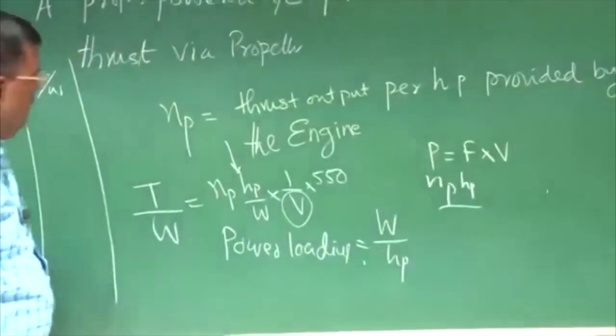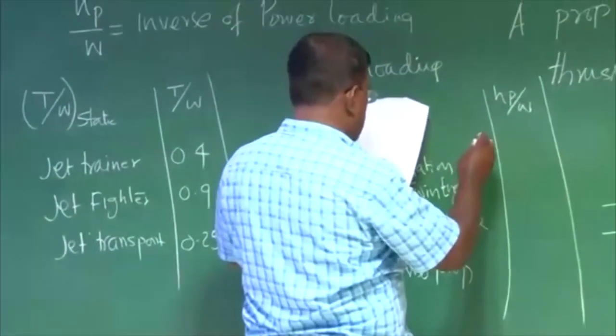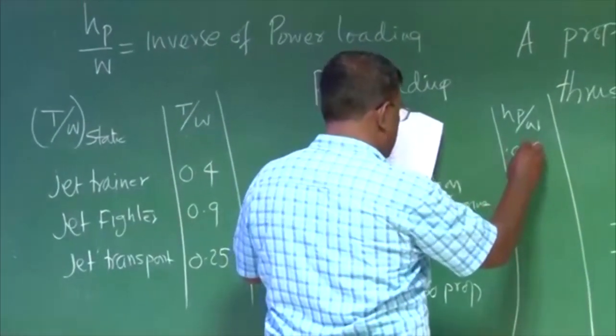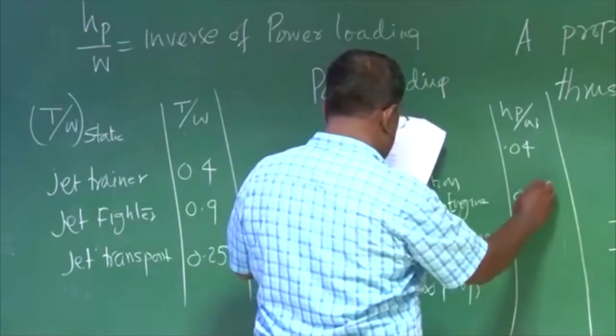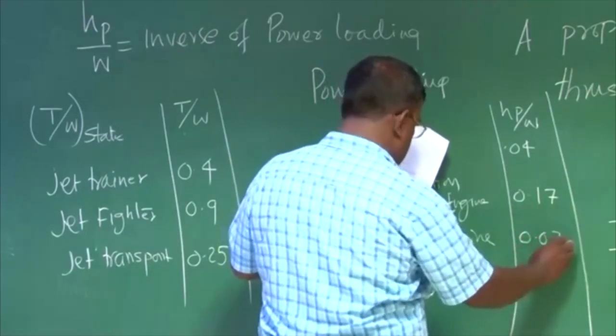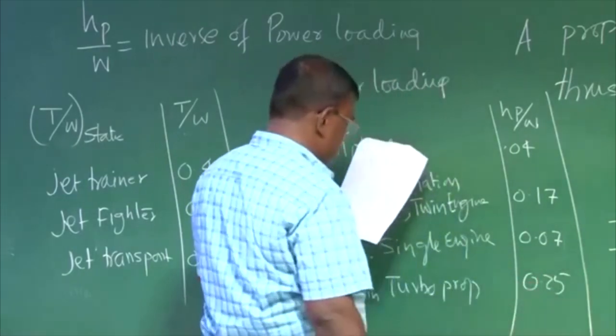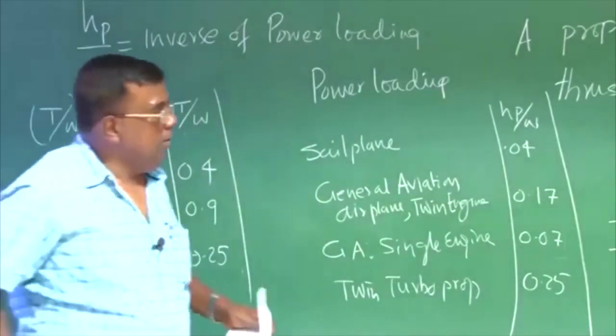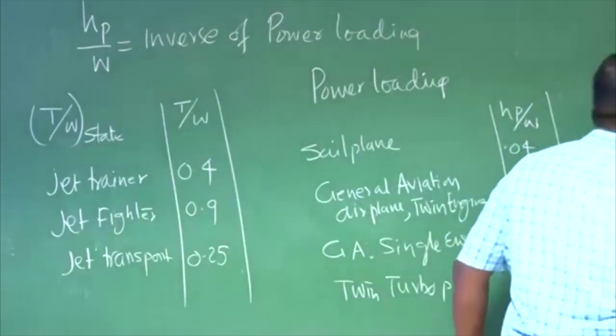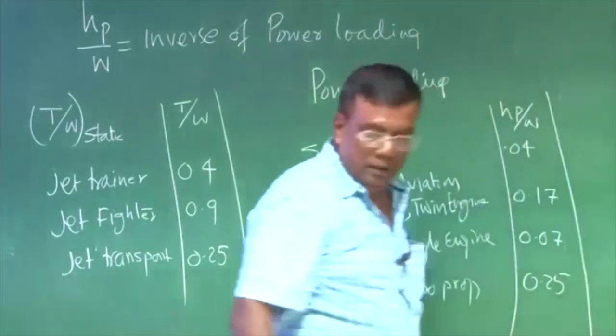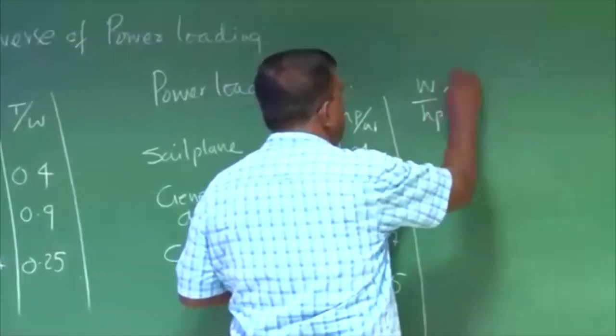For sail plane, for sail plane, it will be 0.04. General aviation twin engine 0.17, single engine 0.07, and twin turboprop 0.25. So if you see equivalently what is the value for power loading, you have to just ensure that you take inverse of it. So that will become W by HP, which is power loading.